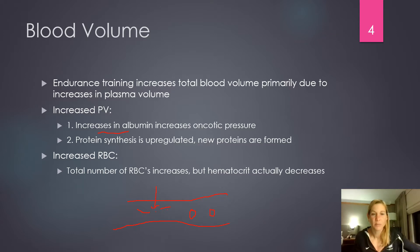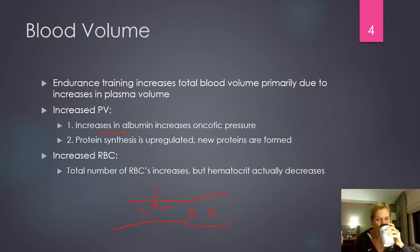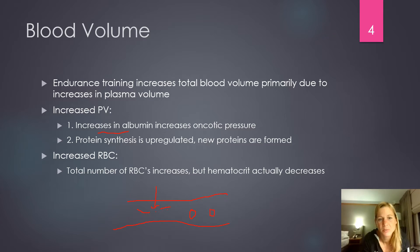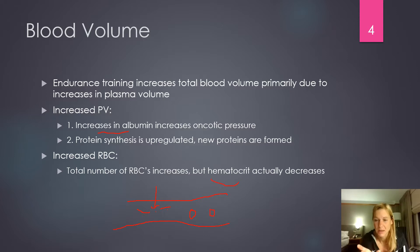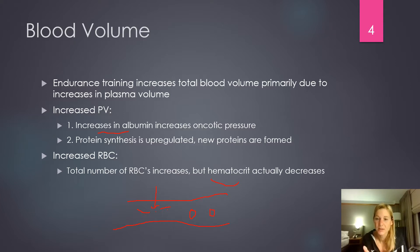We'll see an increase in the total number of red blood cells; however, the hematocrit actually decreases. The hematocrit is the percentage of blood made up of red blood cells. Because blood is made of plasma and red blood cells, we're increasing both components — but we increase plasma volume significantly more than red blood cell count.